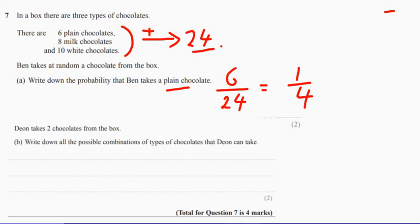Now Dion takes two chocolates from the box. Write down the possible combinations, types of chocolates Dion could have.